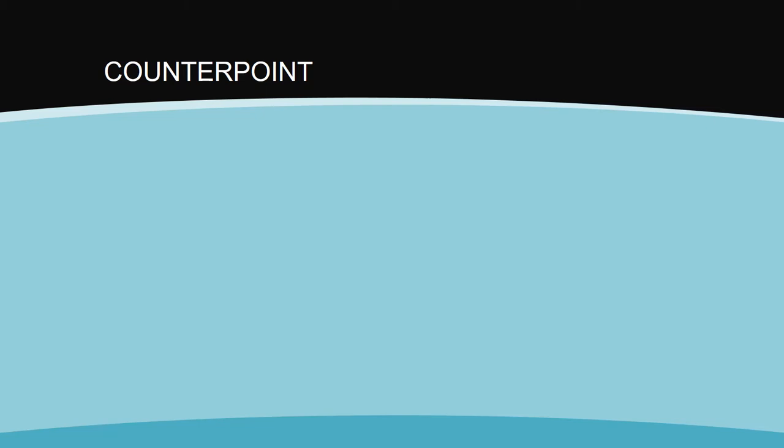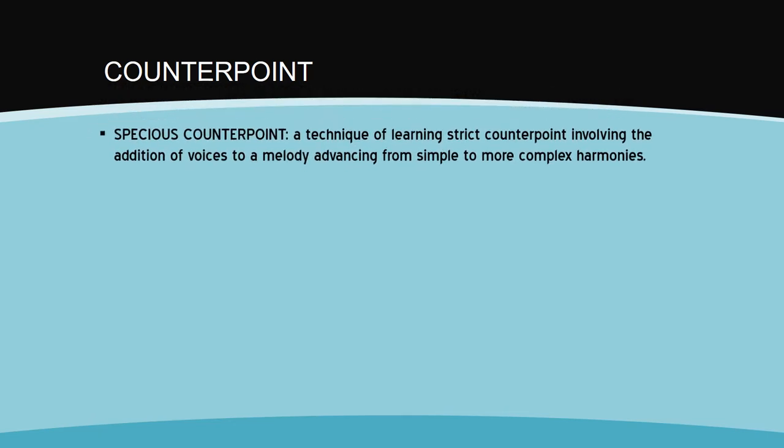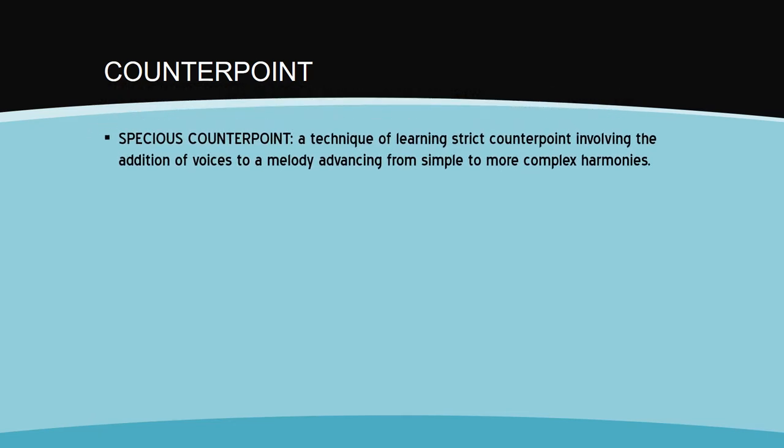The only type of counterpoint we will discuss is called first species counterpoint. Species counterpoint is a technique of learning strict counterpoint involving the addition of voices to a melody advancing from simple to more complex harmonies and textures.